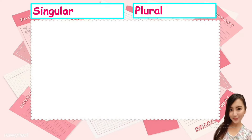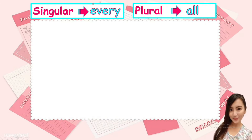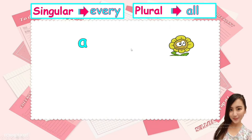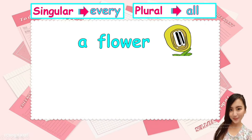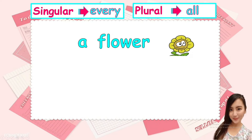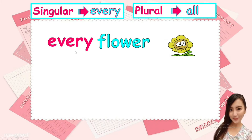We have more examples. Singular is for every — we use every for singular nouns. And we use all for plural nouns. For example, you can see one flower. A flower. Only one. So what are we going to use, every or all? It's only one, so we use every. Every flower.